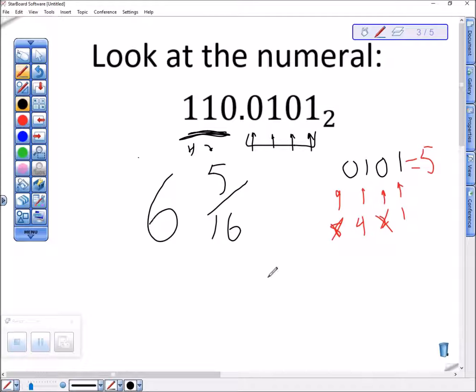I don't remember how the angry computer told me to pronounce it. I take the number after this point, pretend like none of this is here, figure out what the value is. Here it was five. And then put it over the place value that I have at the end here, which was the sixteenths place. So this is six and five sixteenths.